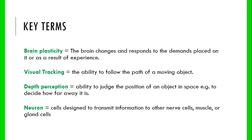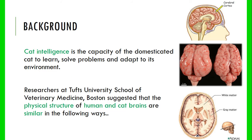Here are a few key terms. Brain plasticity we've already defined. Visual tracking is the ability to follow the path of a moving object — for example, following my arrow with your eyes. Depth perception is the ability to judge the position of an object in space, so you judge how far away things are — you'd only step on a step once your foot could reach it. Neurons are cells designed to transmit information to other nerve cells, muscles, glands, etc.